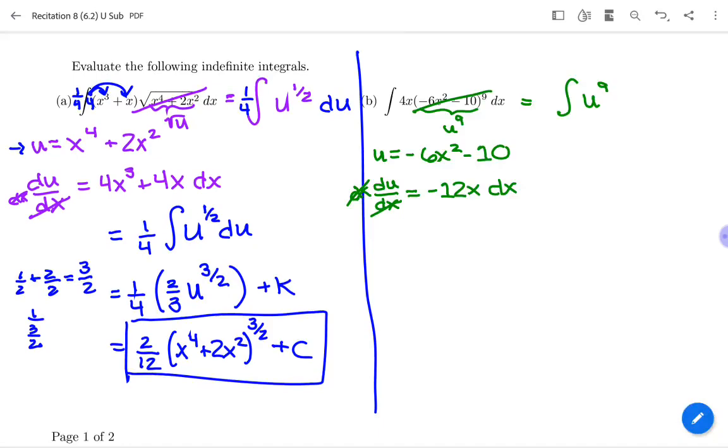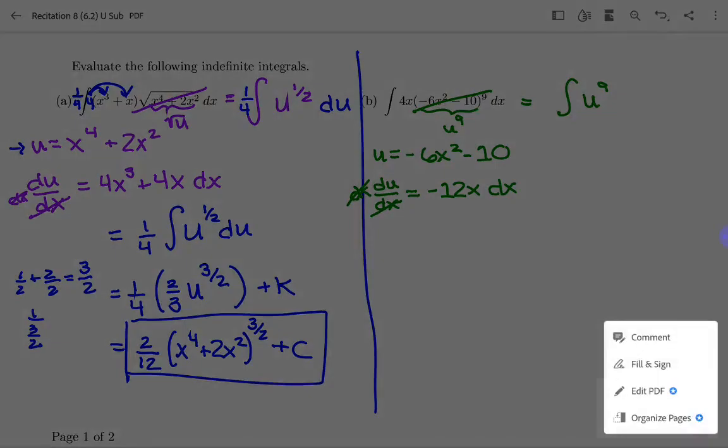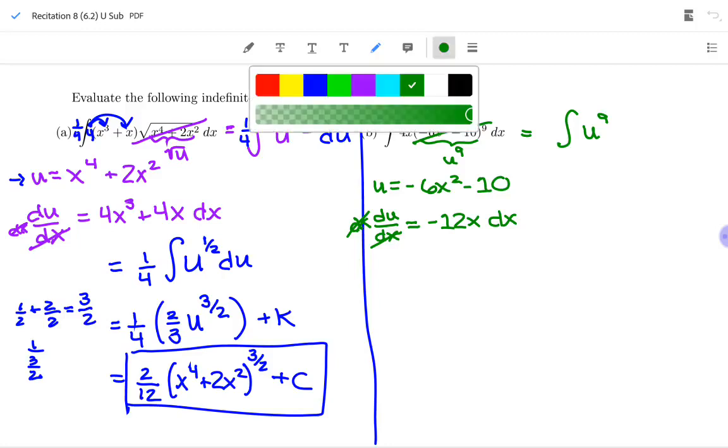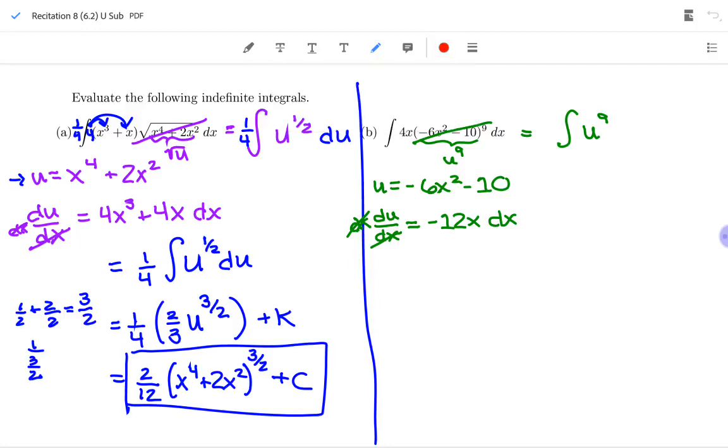And now I'm going to switch colors, and I'm going to think about, do I have a perfect du? If I do, that's great. I just get to write it. If I don't, I can only make a perfect du if I'm off by a number. I can't be off by, like, I'm missing an x squared or something like that. It has to just be a regular number. So if I look at what's left over, I have a 4, an x, and a dx. But I need a negative 12, an x, and a dx.